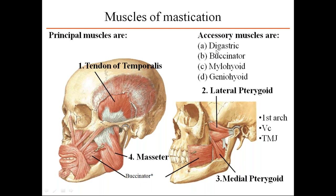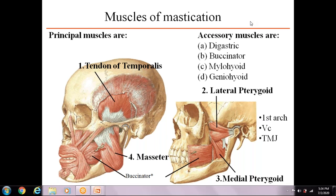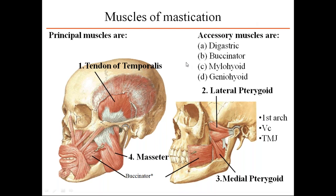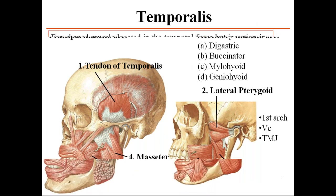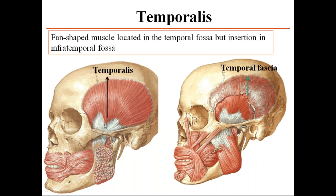The buccinator is a muscle of the face. The other three accessory muscles are present in the neck and are mainly attached to the hyoid bone. Now we will continue into the principal muscles, starting with the temporalis muscle.